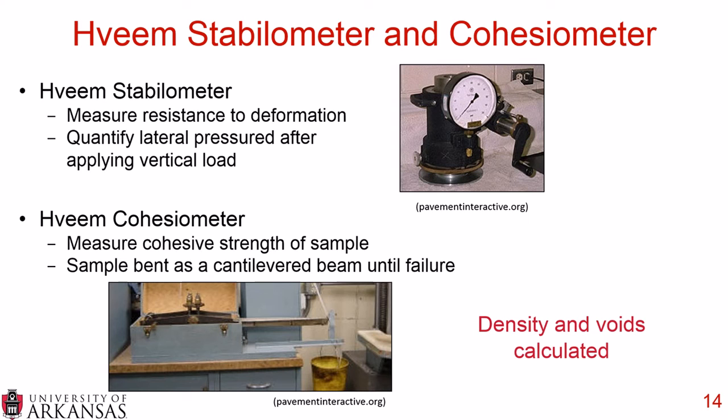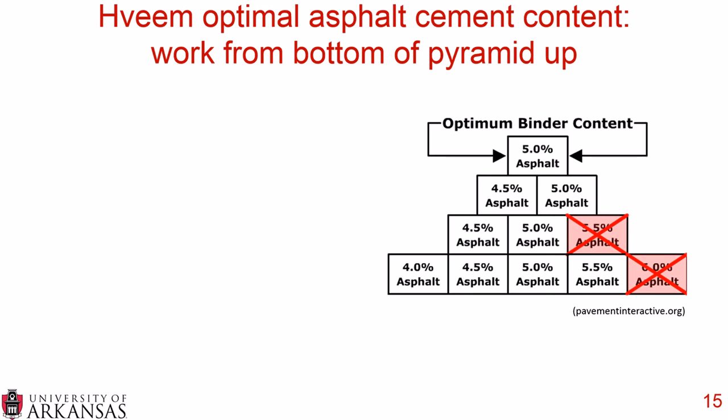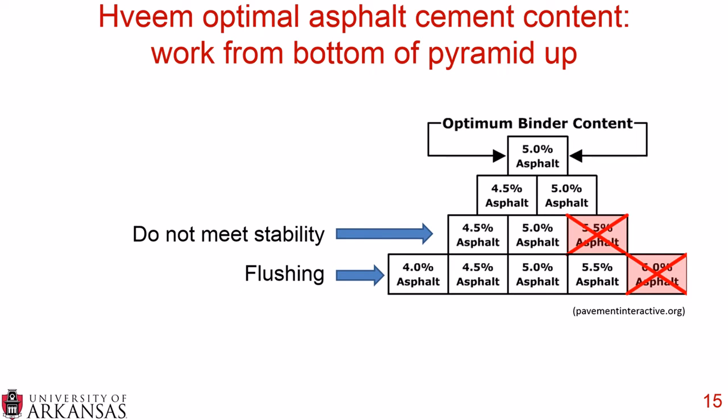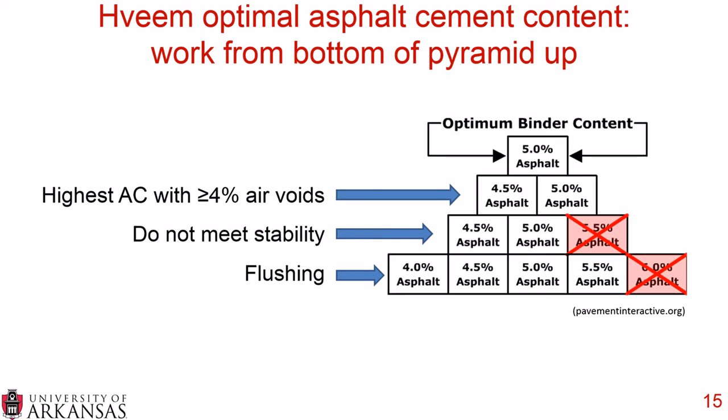During this step, you also quantify the density and the air voids. You can look at this graphically: you have a variety of different asphalt contents and you measure the flushing. The most flushed sample is eliminated, then you eliminate the sample that doesn't meet stability. With the remaining samples, you choose the asphalt content with greater than 4% air voids, and that is your optimal binder content.